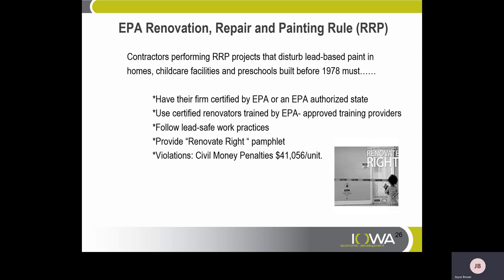EPA's Renovation, Repair, and Painting Rule (RRP). Contractors performing RRP projects that disturb lead-based paint in homes, child care facilities, and preschools built before 1978 must have their firm certified by EPA or an EPA-authorized state — Iowa is one of those — use certified renovators trained by EPA-approved training providers, follow lead-safe work practices, and provide renovators' rights pamphlets. Violations for not complying with the RRP rule could result in civil money penalties of $41,056 per unit.